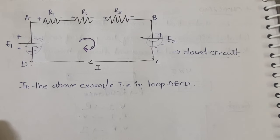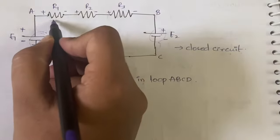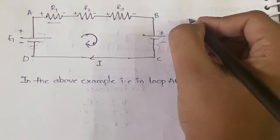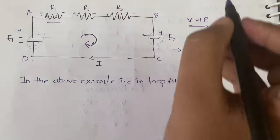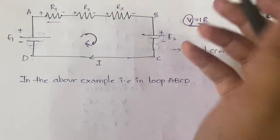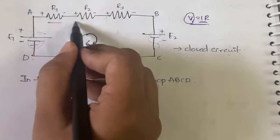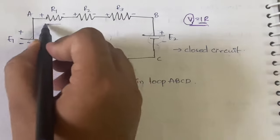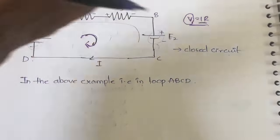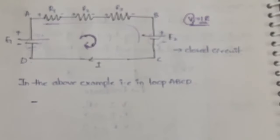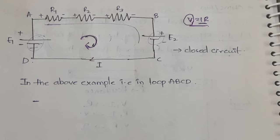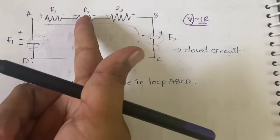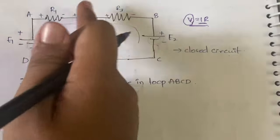KVL: the algebraic sum of potential differences in a closed loop equals zero. Starting at R1 — you may not know the potential difference directly, but from Ohm's law V = IR you can find it. We are going in the direction of current, and at R1 the current goes from positive to negative, so the symbol is negative: −iR1. Similarly at R2, from positive to negative, it is also −iR2.